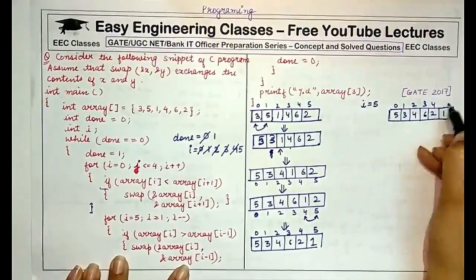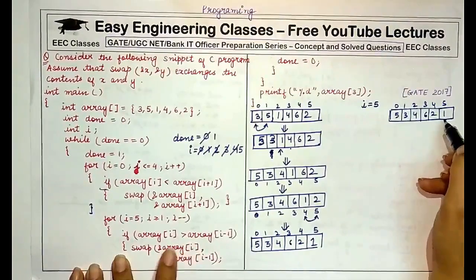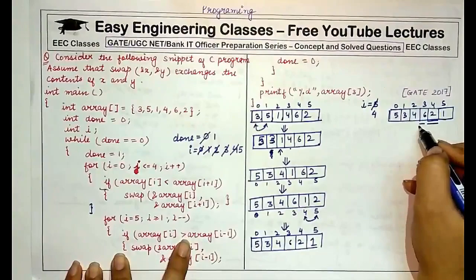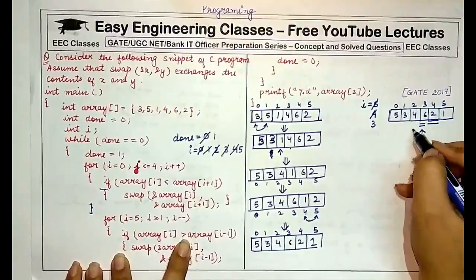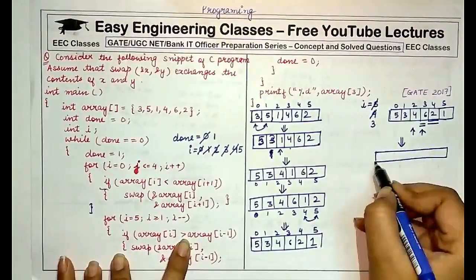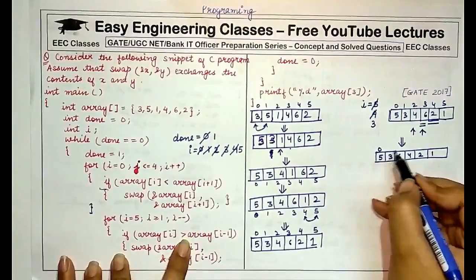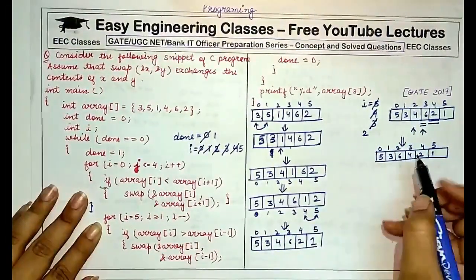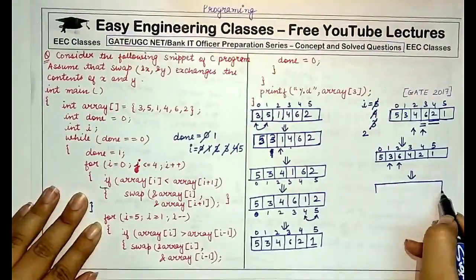We compare: is array[5] greater than array[4]? No. We move ahead. i changes to 4. Is array[4] greater than array[3]? No. We decrement to i=3. Is array[3] greater than array[2]? Yes. So we swap these values: the array becomes 5, 3, 6, 4, 2, and 1. Coming back, i becomes 2. Array[2] is again greater than array[1] which is 3, so these two are swapped again.